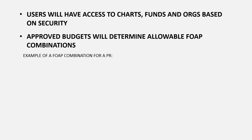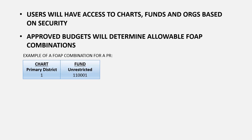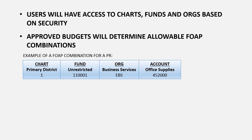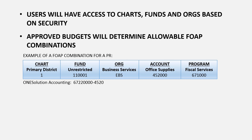Here is an example of a FOP combination entered on a purchase request for office supplies in the business services office. The user would enter Chart 1, then fund 110001 for the unrestricted general fund, then org EBS for business services, then account 452000 for office supplies, and finally program code 671000 for fiscal services. For reference, the One Solution account would have been 67220000-4520.